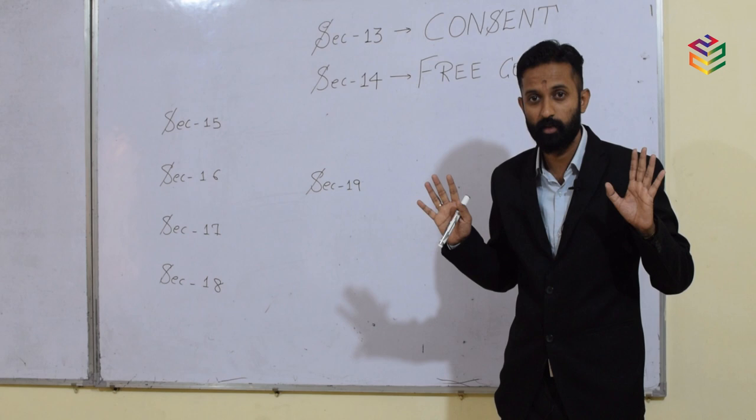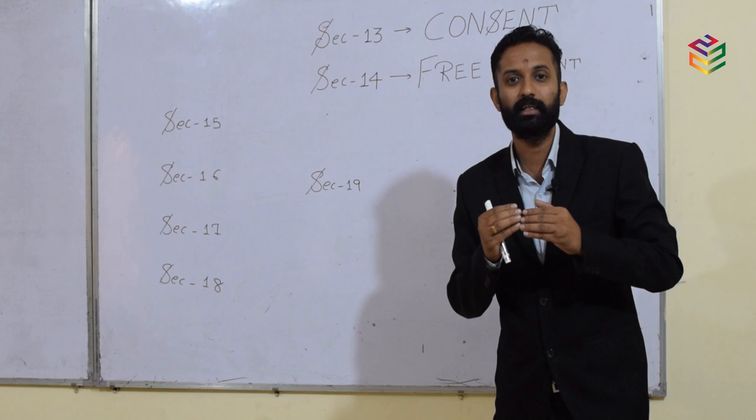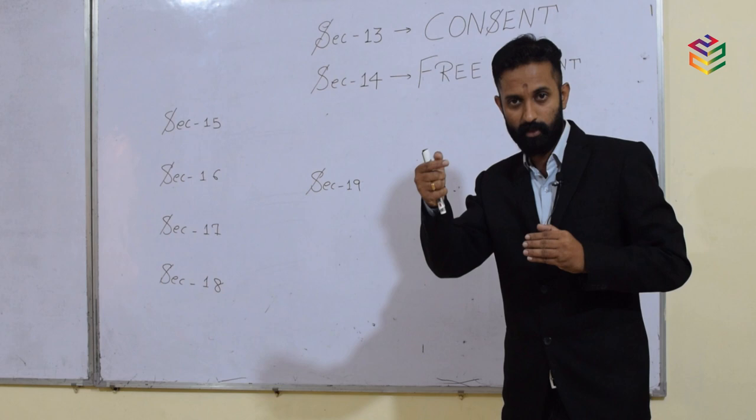As far as exam questions are concerned — what is consent, what is free consent, what are the ingredients of free consent — you have to enumerate and write Sections 13 and 14, and write from Section 15 to Section 19.